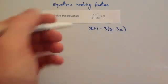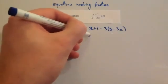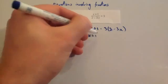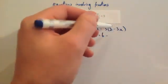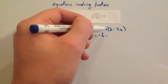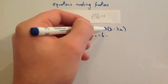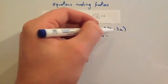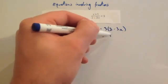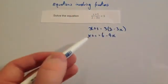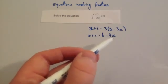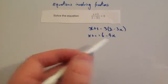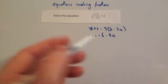Let's expand the brackets. You're going to get x plus 1 equals 6 — 3 times 2 is 6 — and 3 times 3x would be 9x. So we've got x plus 1 equals 6 minus 9x, so let's add 9x to both sides to get rid of it on this side.